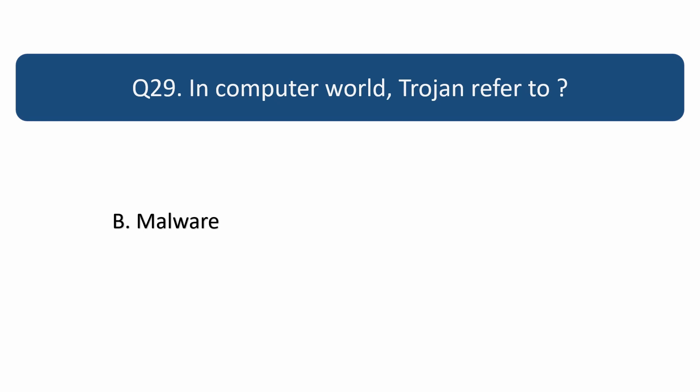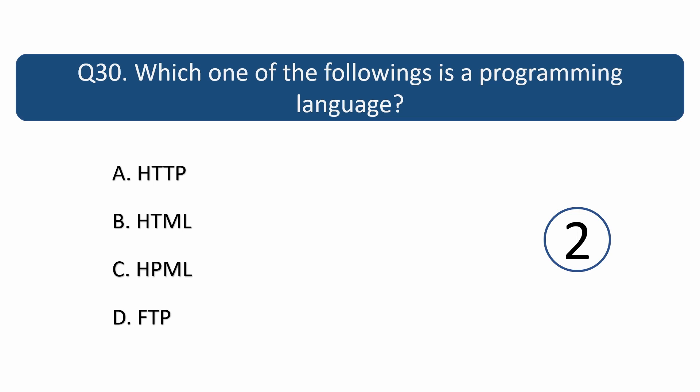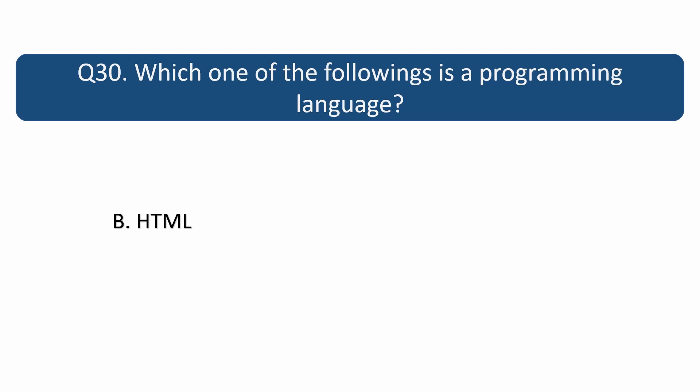Question number 30. Which one of the following is a programming language? Answer is B. HTML. How many answers did you guess?